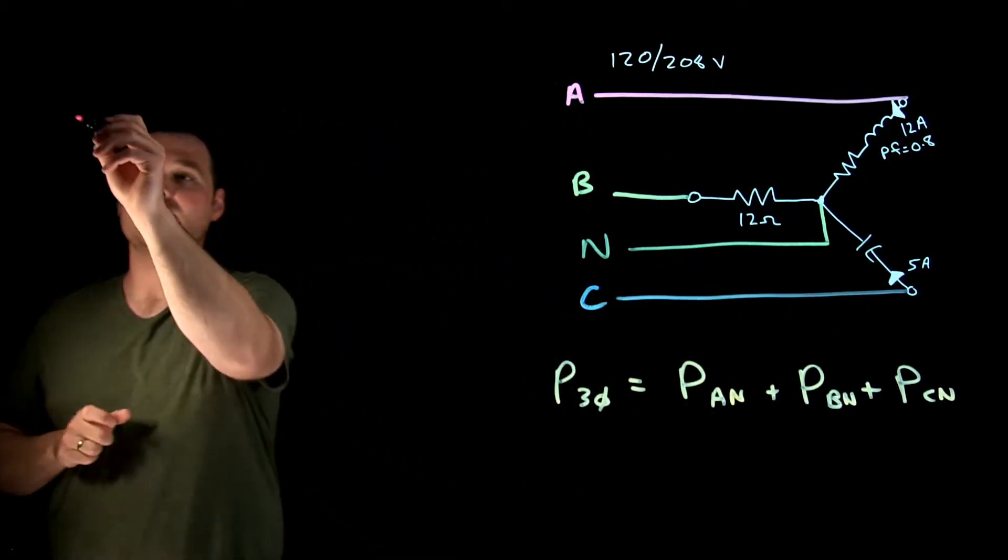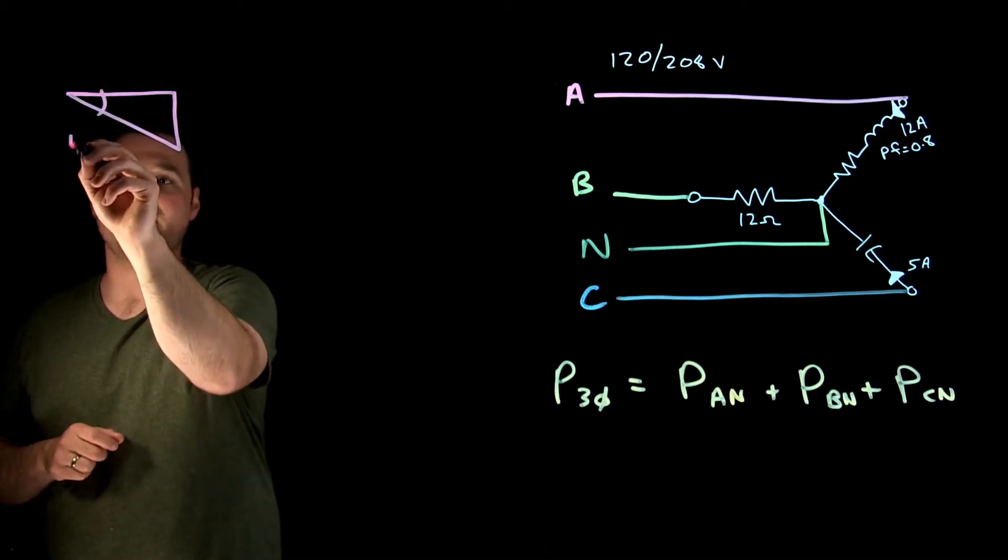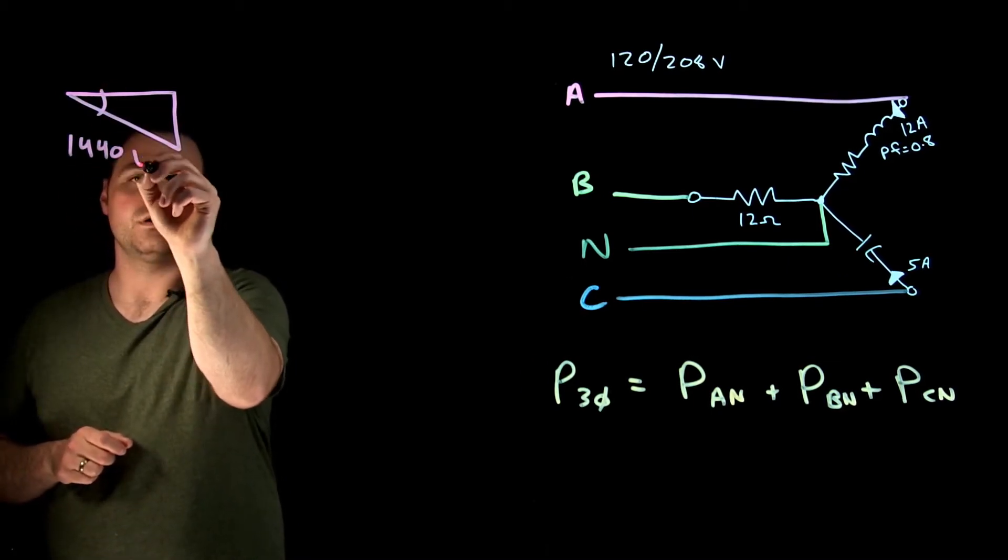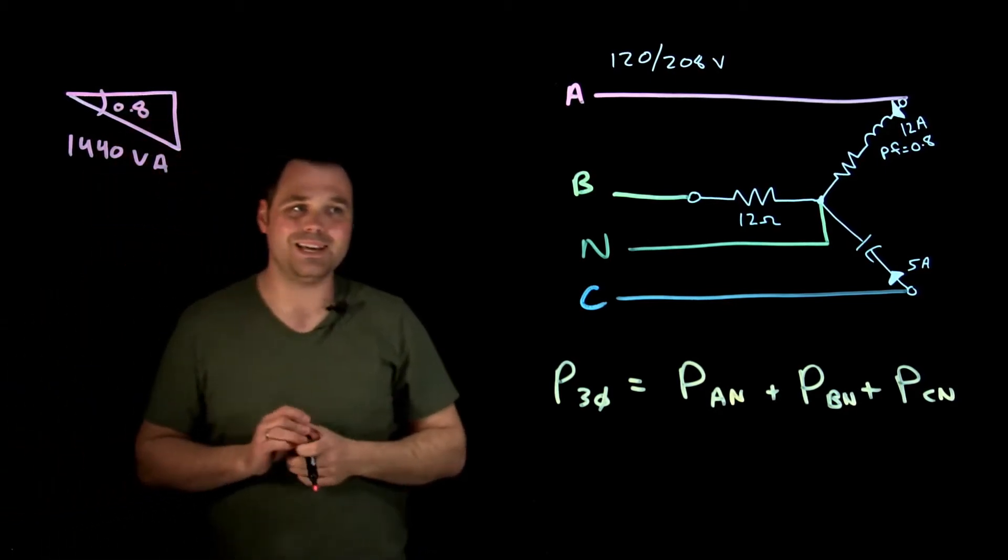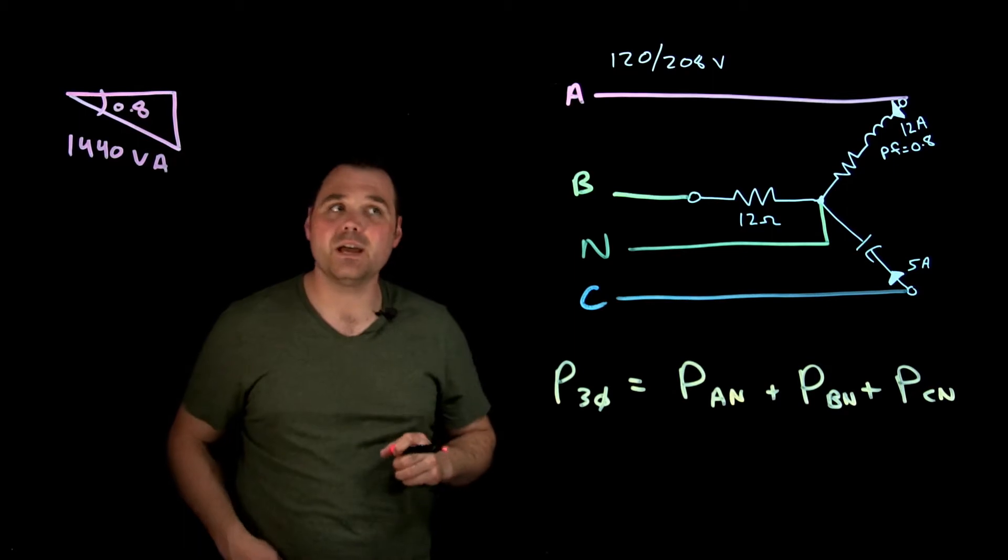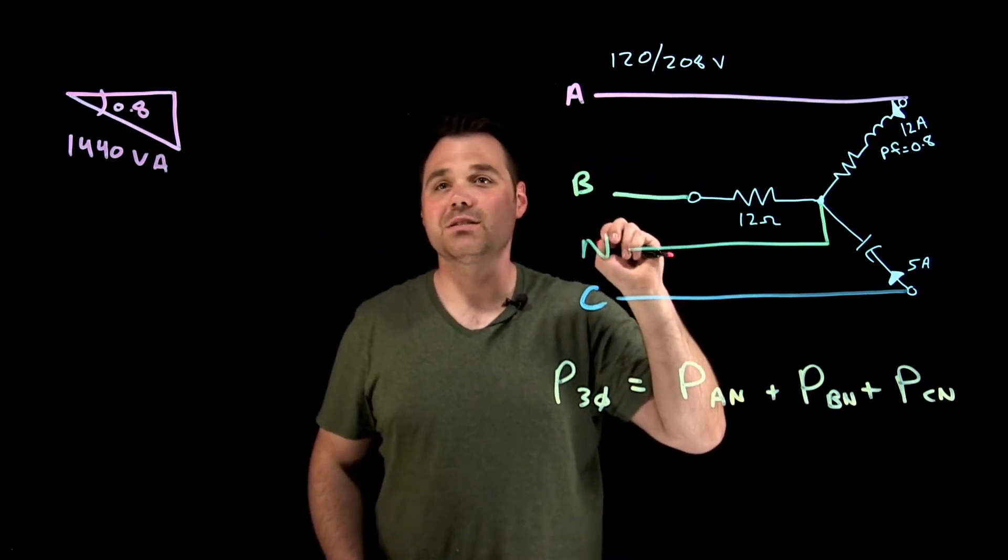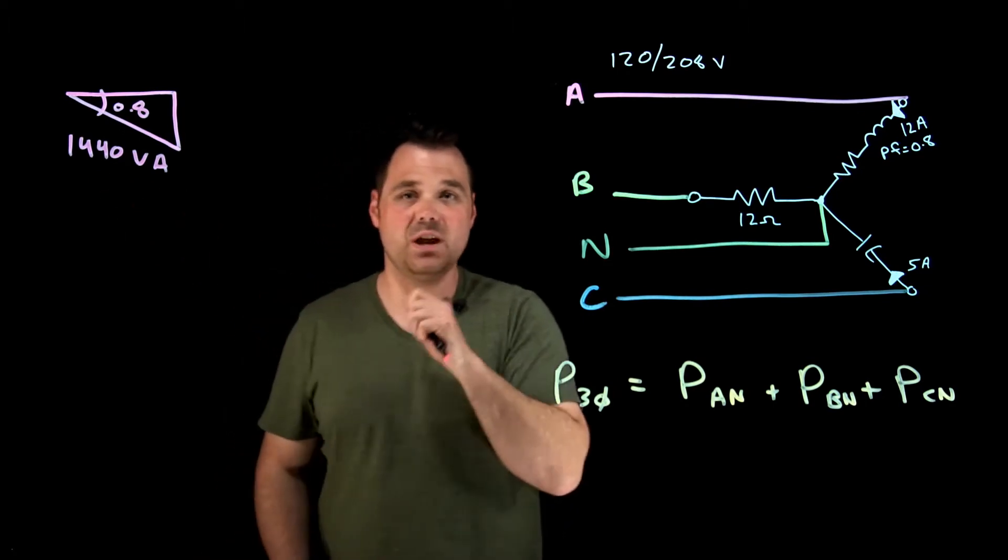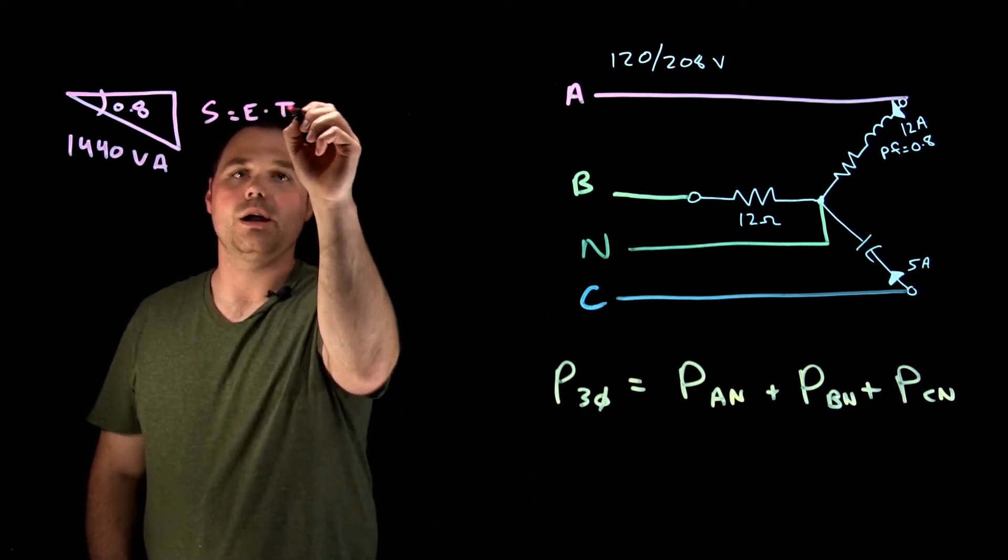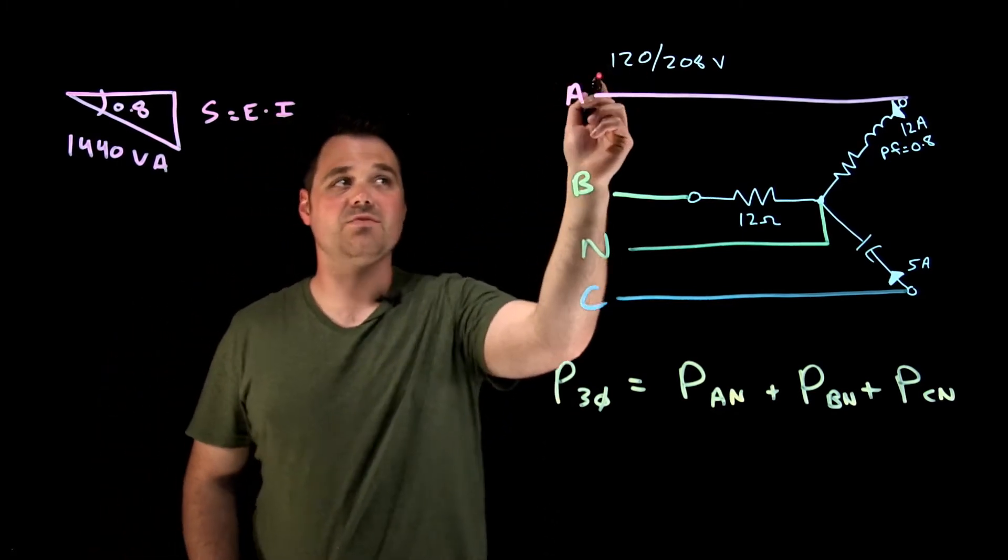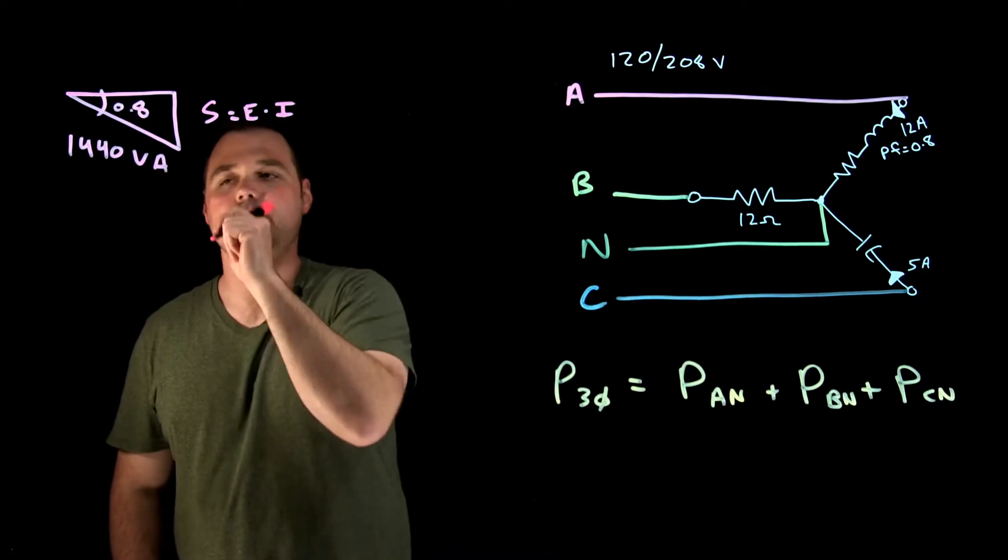Which means in phase A, I would be able to figure out that I have 1440 VA, and I've got that power factor of 0.8. That allows me to figure out that in phase A, again, 120 times 12 amps gives me that 1440 VA. So S equals E times I, phase voltage, phase current, gives me 1440.